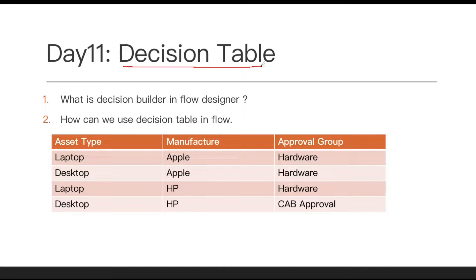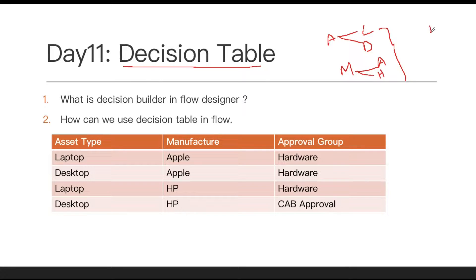The Flow Designer decision builder helps you make decisions based on certain inputs. Let's understand an example. Let's say you have an asset type called laptop and desktop, and another field called manufacturer which is Apple and HP. Based on a combination of these two fields there will be an output or result. If the asset type is laptop and manufacturer is Apple, it will go for approval to the hardware group.